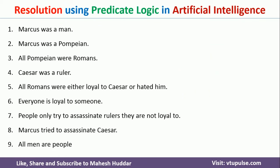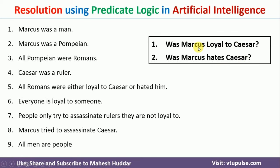In this example, we have been given 9 statements or facts. Given these particular facts, we want to know whether Marcus is loyal to Caesar or Marcus is not loyal to Caesar — that's the first question. The second one is we want to know whether Marcus hates Caesar or not. To answer these two questions, we need to convert these 9 facts into logical statements. I have already discussed how to do that in the previous video; the link is given in the description below.